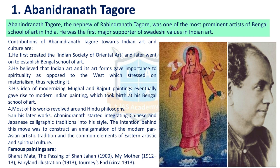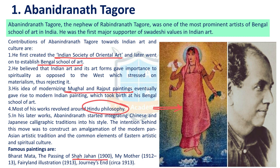Next, let us understand history and art and culture related issues. The first issue is Abanindranath Tagore. His 150th birth anniversary was celebrated recently. He first created the Indian Society of Oriental Art and later established the Bengal School of Art. He modernized Mughal and Rajput painting, and most of his themes revolve around Hindu philosophy. Some of his famous paintings include Bharat Mata, Passing of Shah Jahan, My Mother, Fairyland Illustration, and Journey's End.